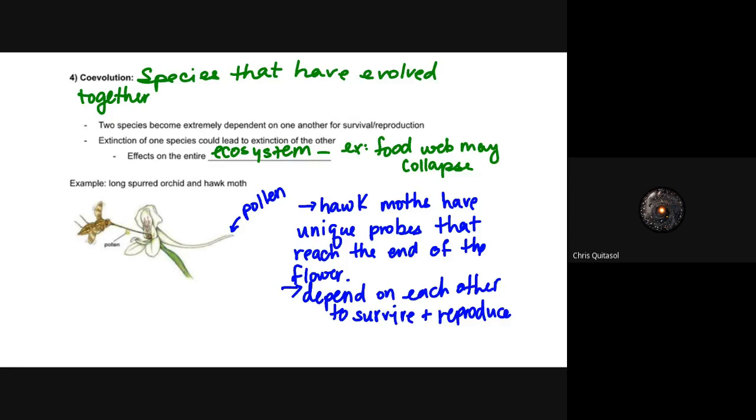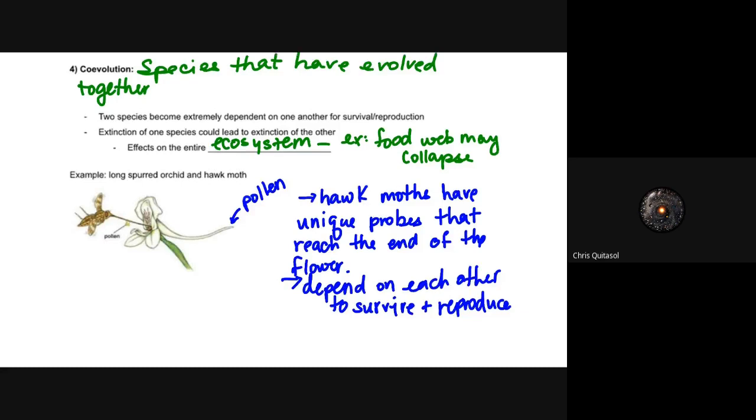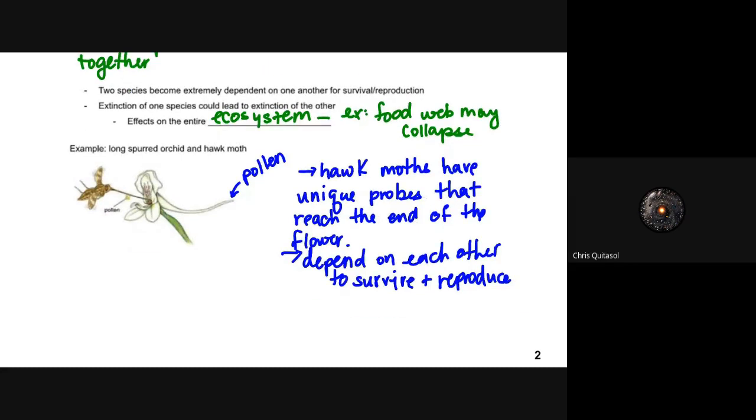An interesting example is the long-spurred orchid and the hawk moth. The hawk moth has a very unique nose or probe, if you will, that can reach to the end and the tip of the flower of the spurred orchid, and they depend on each other to survive. Because the spurred orchid can't be pollinated by any other insect other than the hawk moth, because where the pollen resides at the absolute very tip of this flower, no other insect can get in there, get the pollen, and then allow for that help out with that reproduction of those plants. Whereas the hawk moth pretty much solely relies on the spurred orchid for its food source. So if one of those species were to die out or go extinct, both of them would probably go extinct, and they have very large connections to the rest of the food web, which would lead to a lot of issues in that ecosystem.